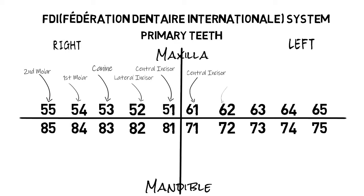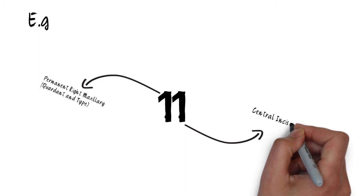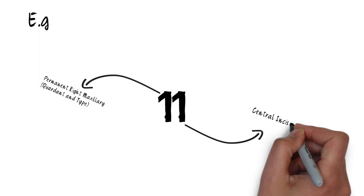So for example, 5 1 represents your primary right maxillary central incisor, 6 1 represents your primary left maxillary central incisor, 7 1 represents your primary left mandibular central incisor, and 8 1 represents your primary right mandibular central incisor. The FDI system utilizes two individual digits with no use of alphabets for primary teeth: the first digit represents the quadrant and also signifies whether the tooth is primary or permanent, while the second digit represents the tooth type.